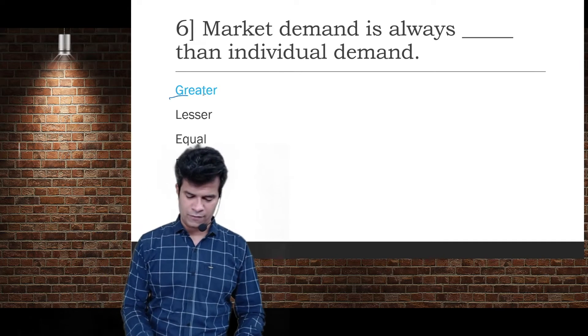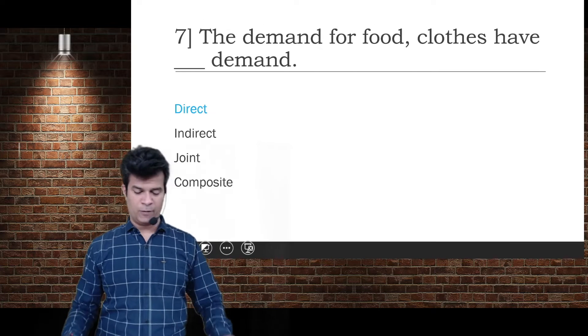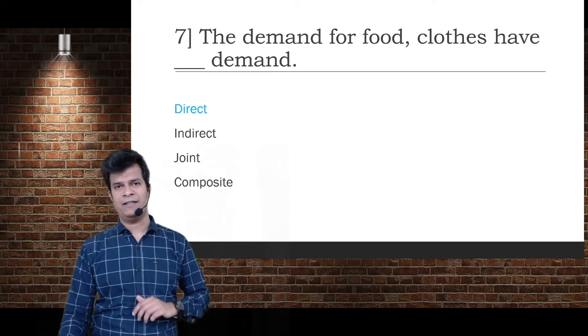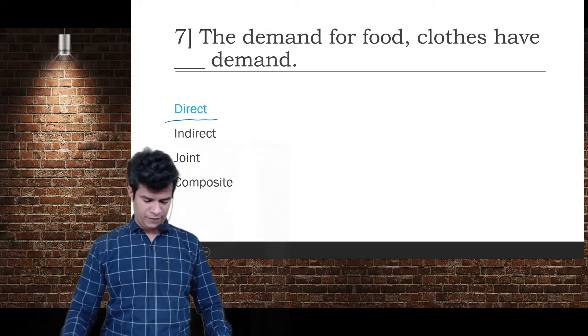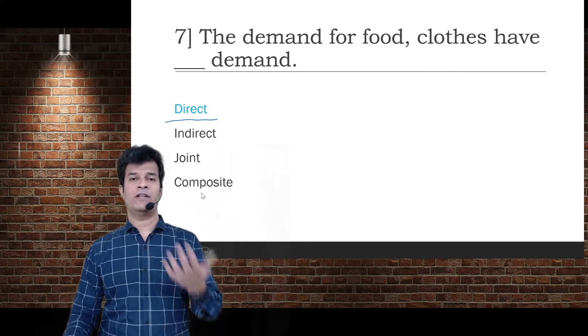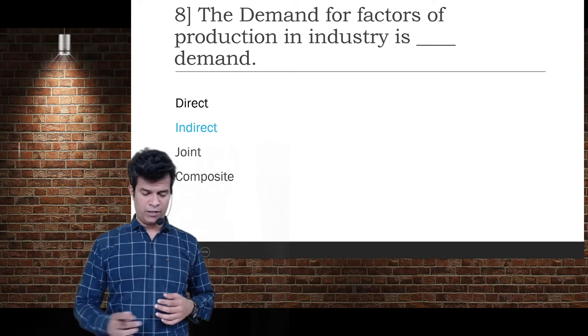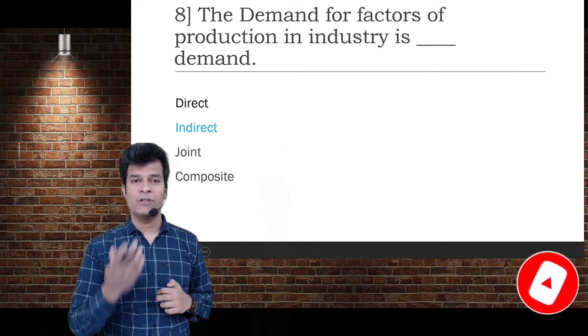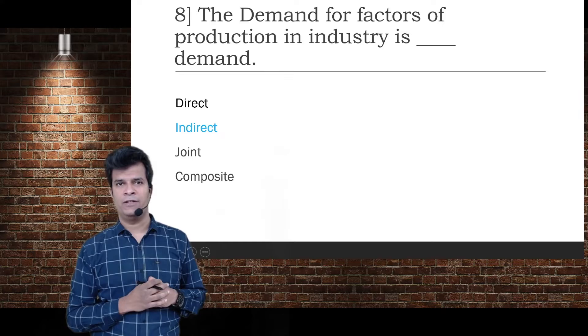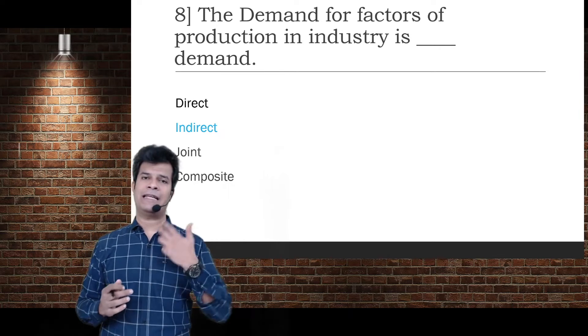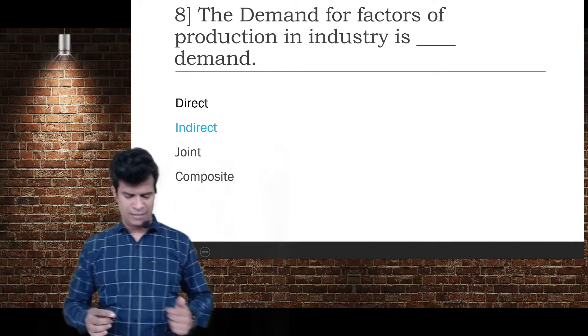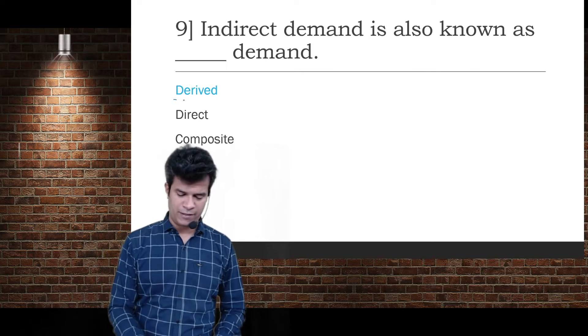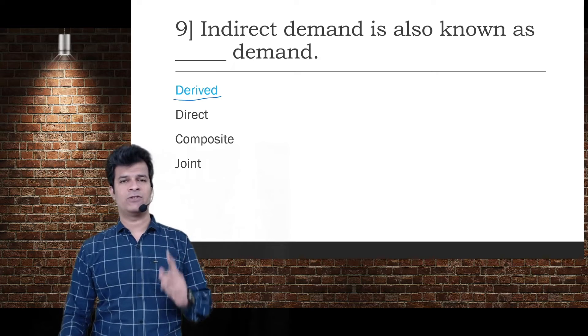The demand for food and clothes have direct demand. These things which are demanded directly to consume come under direct demand. The demand for factors of production in industry is indirect demand, which is also known as derived demand.